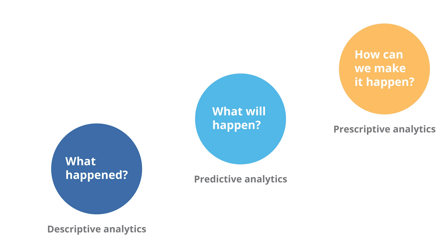Predictive analytics is what will happen — it predicts the time to reach your destination given the time of day, weather conditions, and traffic flow. Prescriptive analytics is the suggestions, comparing several traveling routes and recommending the best solution.